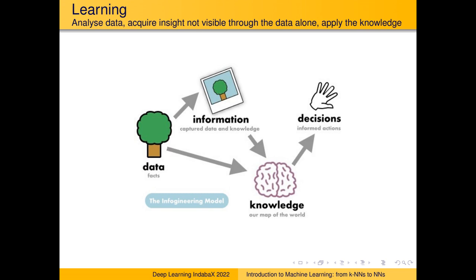Another important source is information — a meaningful representation of data. We as human beings have language, which is an amazing compressed representation you can use to describe data and pass it to other people. You can describe an apple to somebody who hasn't seen an apple — sure it's not the same as tasting one, but they'll get an idea. So information is a useful representation of data, and we learn from both.